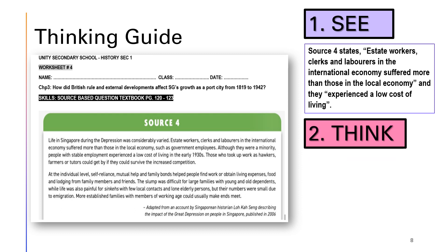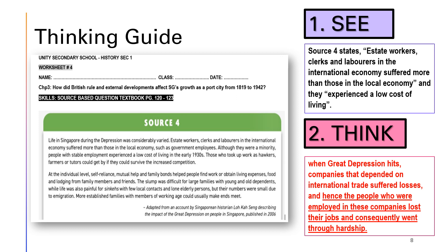Next is what do you think? When the Great Depression hits companies, people who were employed in these companies lost their jobs and they went through hardship. Remember, employers suffered more than those in local jobs. So what does 'suffered more' mean? Think about it. If you are a worker and you are unable to provide the basic necessities for your family, how does it affect the individual?